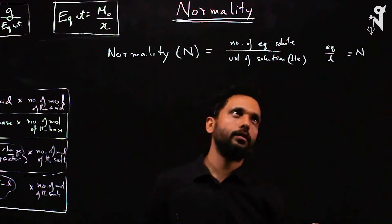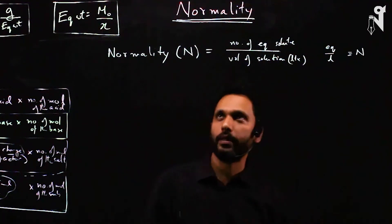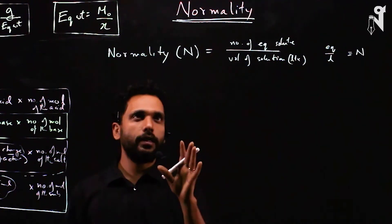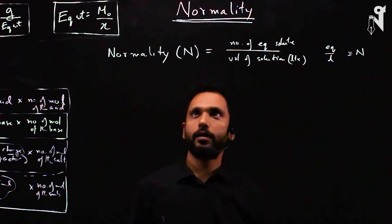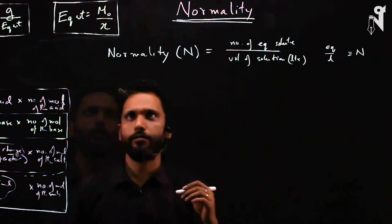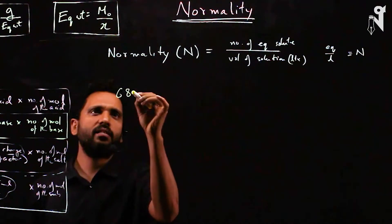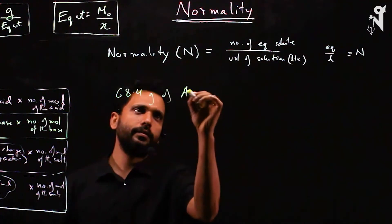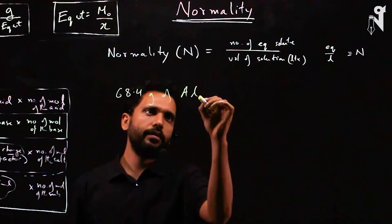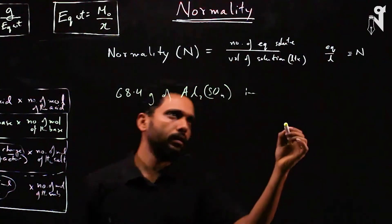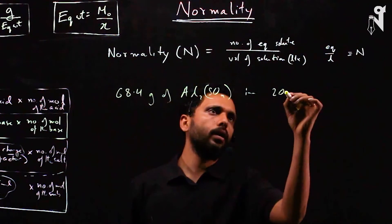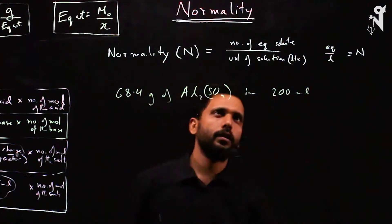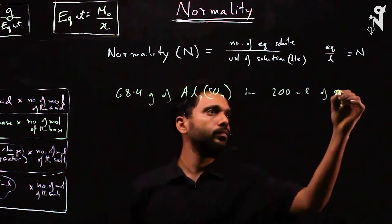So if you have two equivalents per liter, we call it two normal. I'll give you a question to apply the formula: suppose we have 68.4 grams of aluminium sulfate in 200 ml of solution.